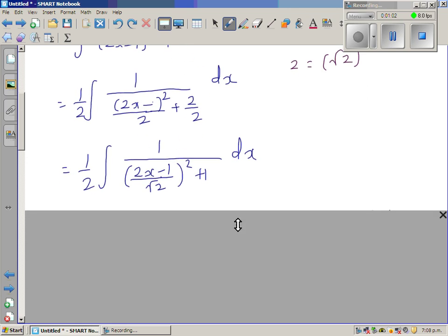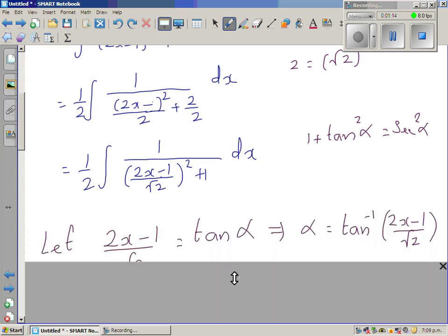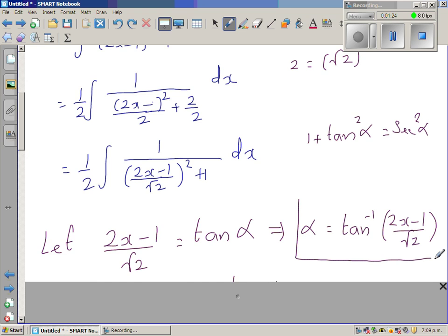Now this form is a good form for trig substitution because I know 1 plus tan squared alpha or theta is equal to sec squared alpha. And that's why I've taken 2x minus 1 over root 2 as tan alpha which implies alpha is tan inverse of 2x minus 1 over root 2.